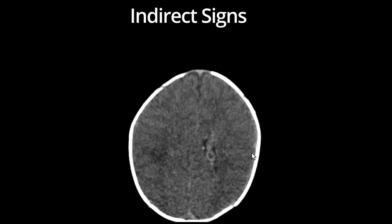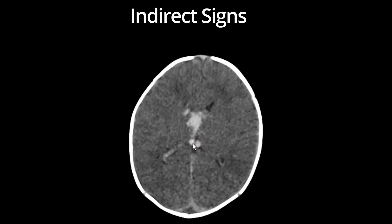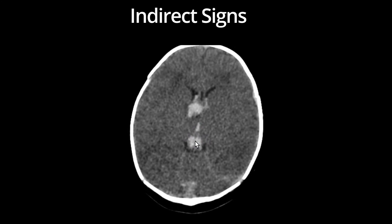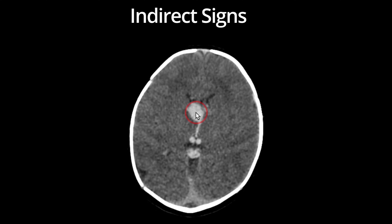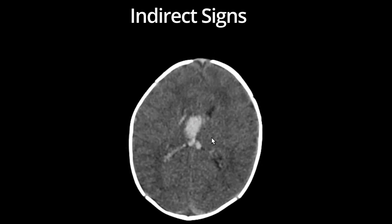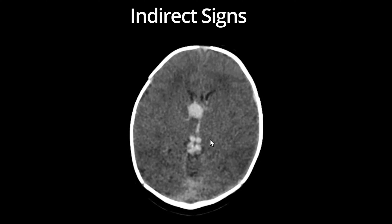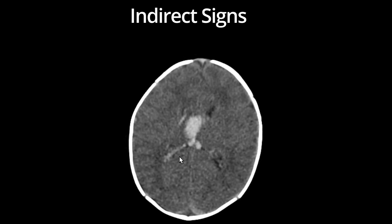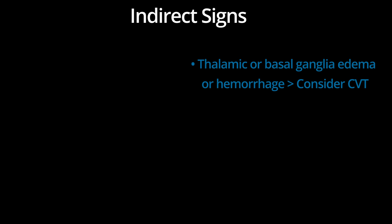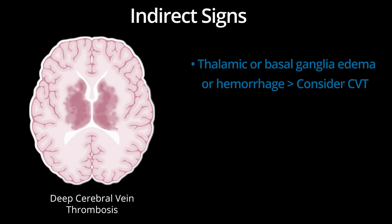Here is an example of deep venous thrombosis. In this case, both internal cerebral veins are hyperdense and they drain into a hyperdense vein of Galen. These findings alone are concerning for thrombosis of the deep venous system. In addition, there is intraparenchymal hemorrhage in the right basal ganglia at the caudothalamic junction, most consistent with hemorrhagic transformation of a venous infarct. Although the thalamus is not the center of edema and hemorrhage in this case, remember that thalamic edema is a hallmark of deep venous occlusion, and edema may extend into the caudate and surrounding deep white matter. Again, venous thrombosis is often bilateral — if you see bilateral edema or hemorrhage in the thalami or basal ganglia, think about CVT.